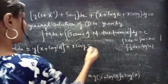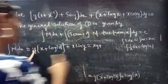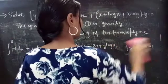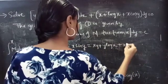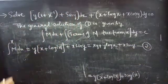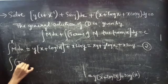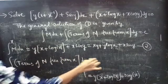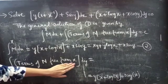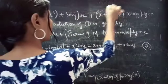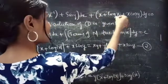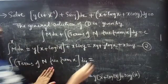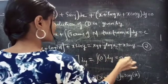This equals to xy plus y log|x| plus x sin y. Consider it as equation 2. Now find the terms of N which are free from x. The first term of N contains x, the second term also contains x, and the third term x cos y also contains x. So we don't have any terms of N free from x, so this integral equals 0. Consider it as equation 3.